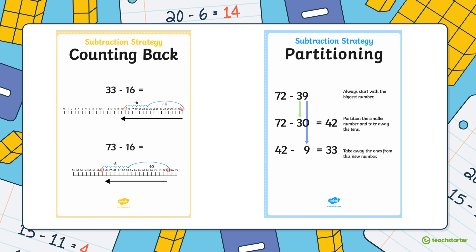We've got the counting back strategy, where we count backwards. We can use a number line to do this, we can bridge to ten, and we can use our jump strategy counting backwards. It's all those skills we've been learning, but going backwards when we're doing subtraction, not forwards.